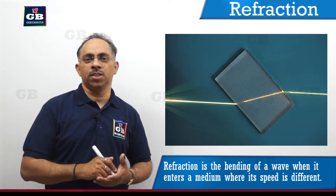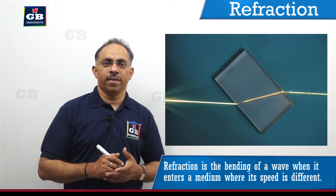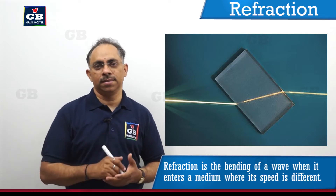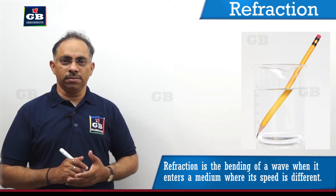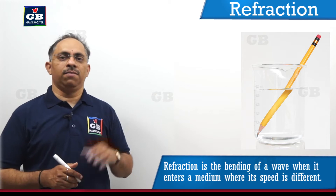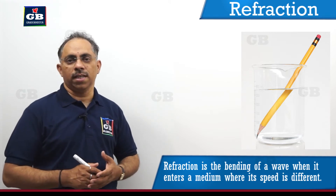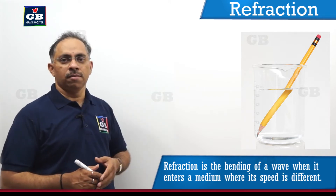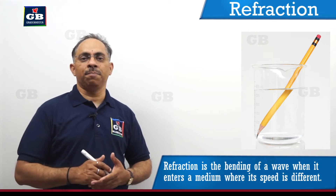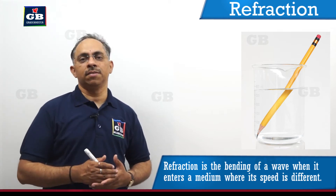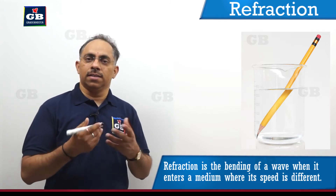Apart from reflection, when the surface allows light to pass through it, here comes the picture of refraction. Whenever a light ray travels from one medium to another medium, it bends. To understand this concept, take a glass of water and immerse a pencil into it. If you see from the side and immerse the pencil at a slant, it will appear as if the pencil is broken at the surface of the water.